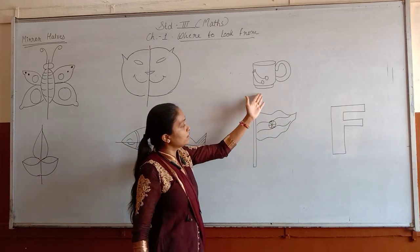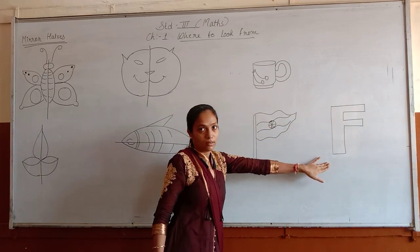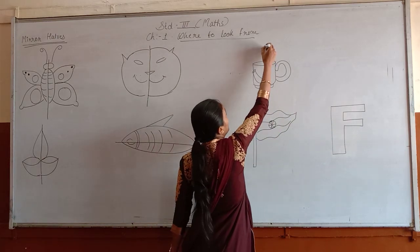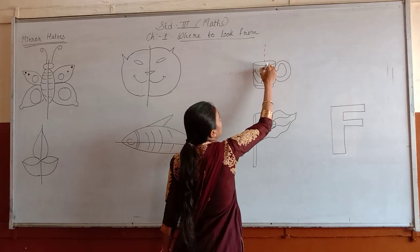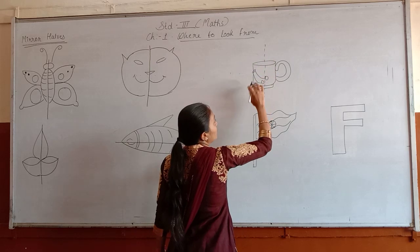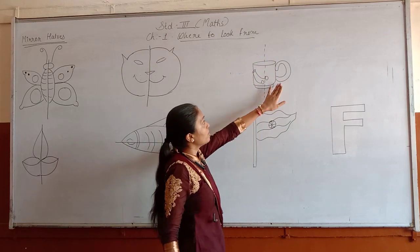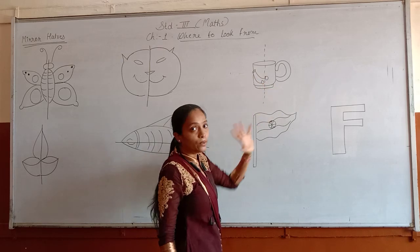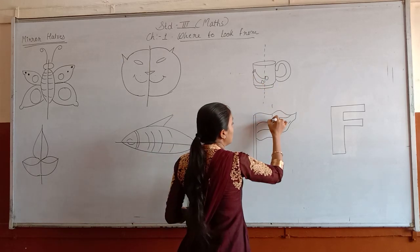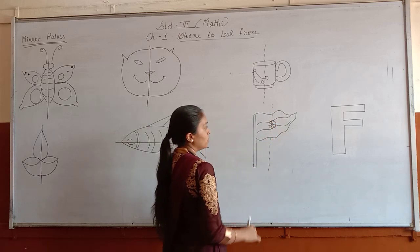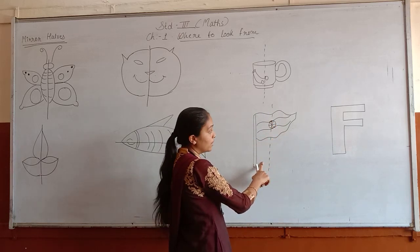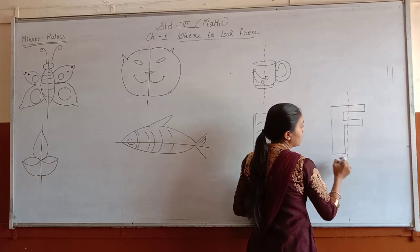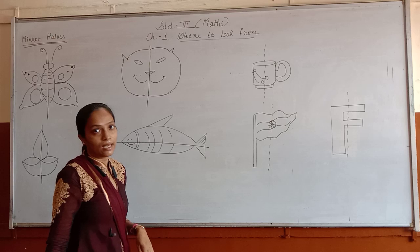Here a few pictures are given — a cup, a flag, and the letter F. If you will put the mirror here in the middle, you won't be able to get the same picture on the next side. Because here one side the handle is there and the handle is not there on the other side. So in a few pictures you won't be able to get the same picture. In F also, if you will put the mirror here, both the sides are not same.